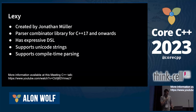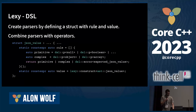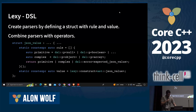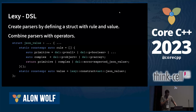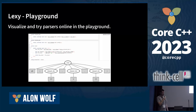Now it's time to move to our second library, and also timely because this one uses C++17. Lexi is a parser combinator library created by Jonathan Mueller. It has an expressive DSL for combining parsers and it can compile at runtime or at compile time, and it can parse at runtime or compile time. Lexi also has an online playground to visualize and try parsers, which is a useful tool if you want to iterate quickly and debug your parsers.